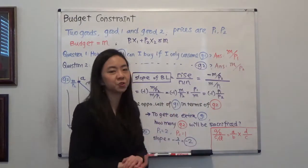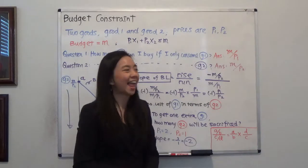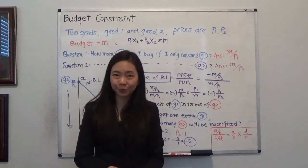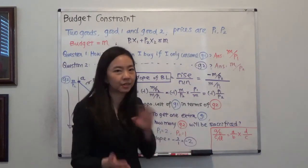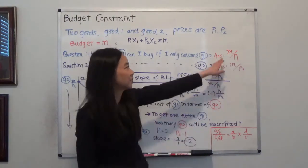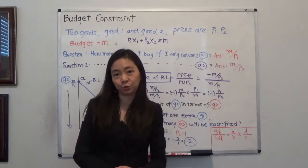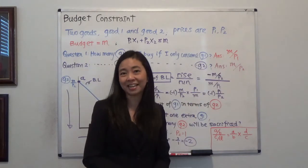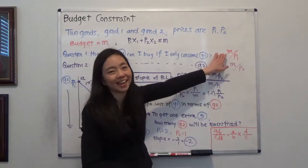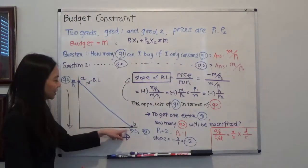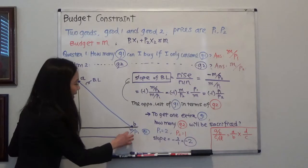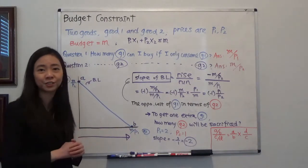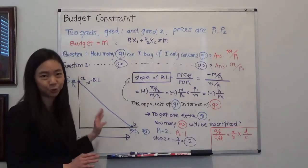Think about this. If you have a budget of twenty dollars and the price of an apple is two dollars, then how many apples can you buy? If you buy only apples and no other fruit, then the answer will be 20 divided by two and that will give you 10 apples. So that's where we find our first intercept at good one: M divided by P1. That's the number of good one I can purchase if I don't buy any good two.